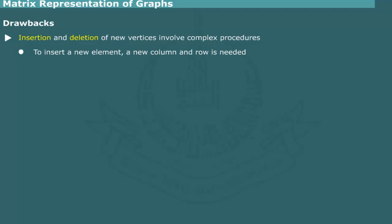A drawback of matrix representation is that insertion and deletion of new vertices involves complex procedures. To insert a new vertex, we would need to add a new column and a new row. Also, the columns and rows would need to be shifted to place the new vertex in proper location.